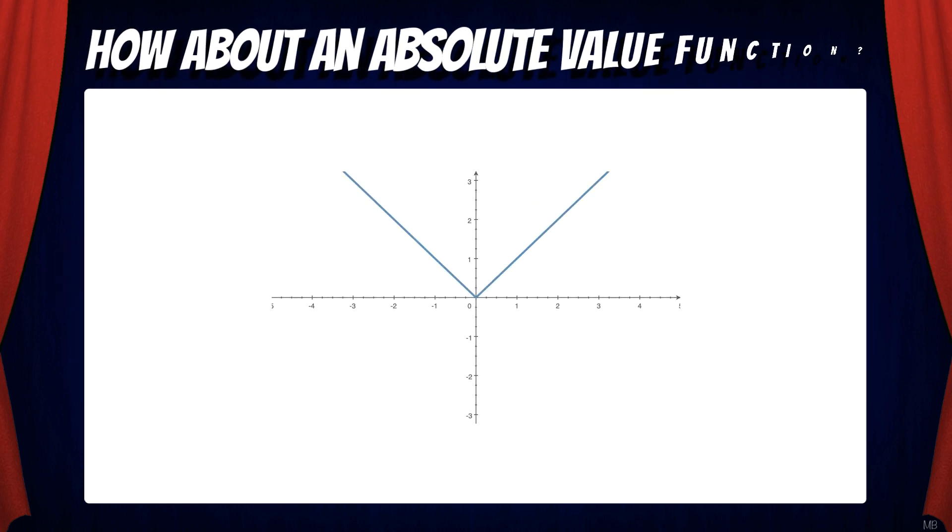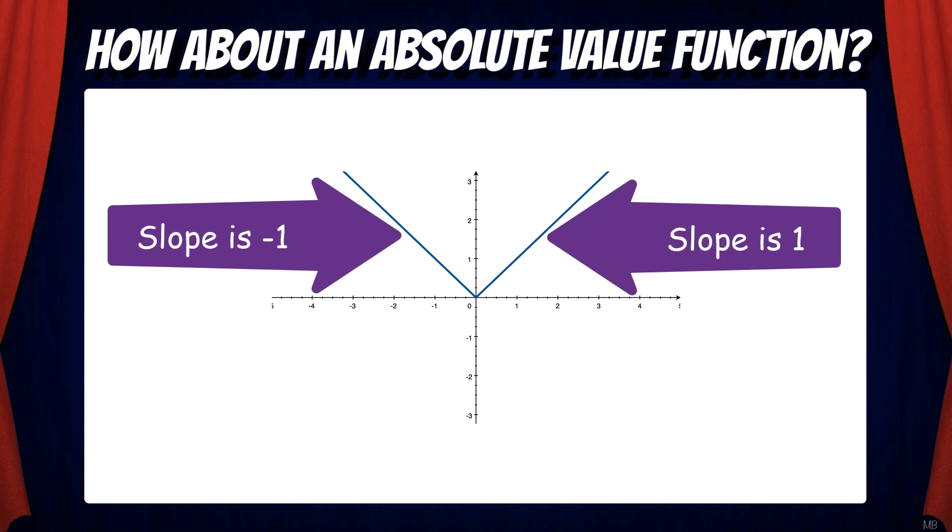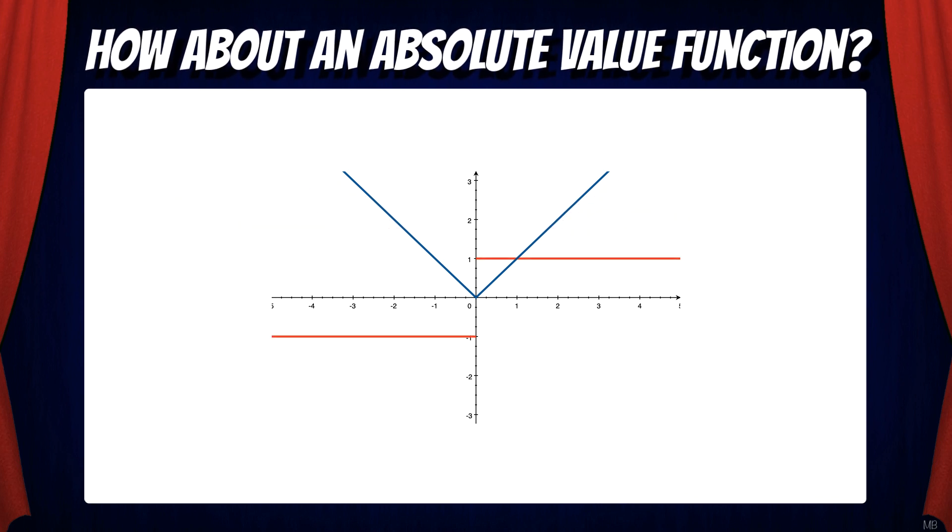Let's do one more example. Suppose f equals the absolute value of x. How would we draw the derivative function? Well, on the left, the slope is negative 1. On the right, the slope is 1. That means we're going to have two horizontal lines that represent the derivative.